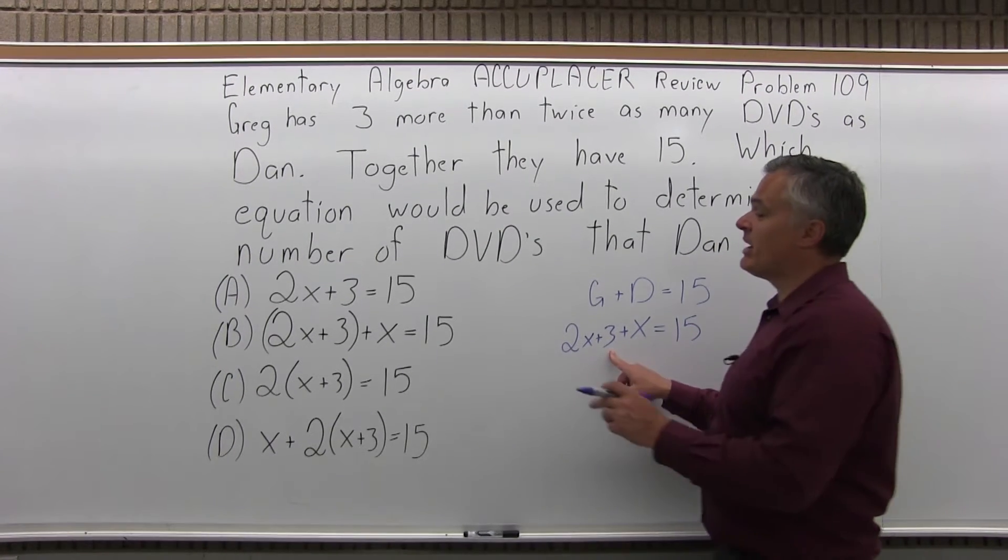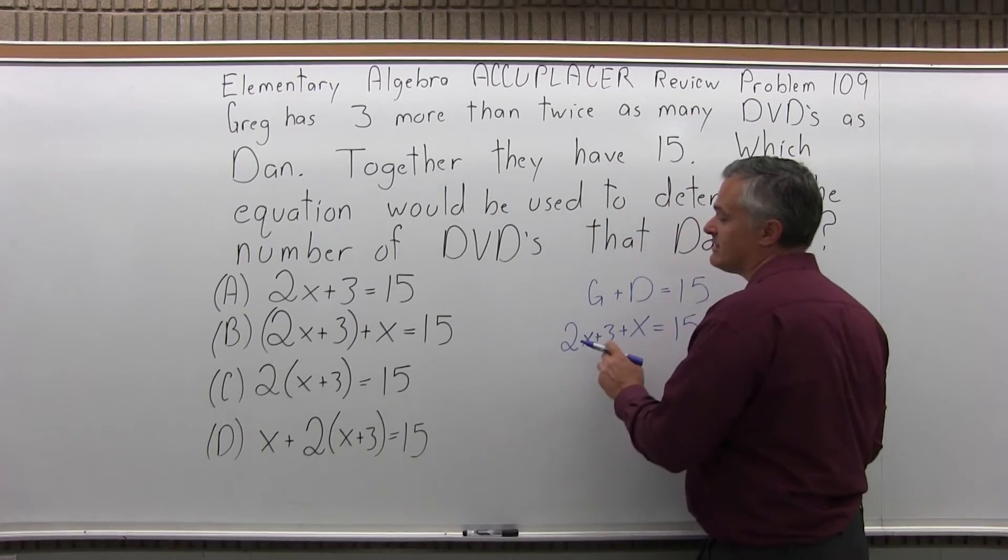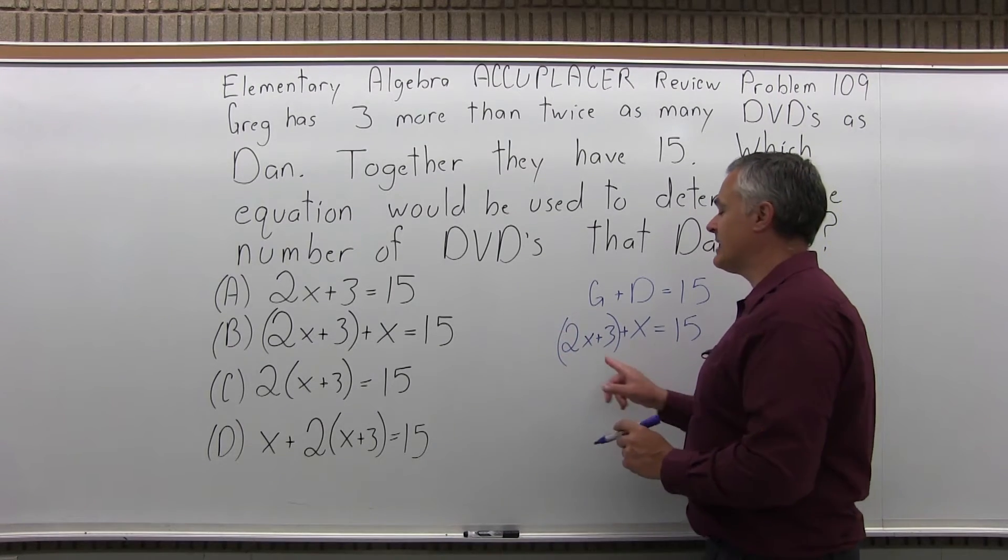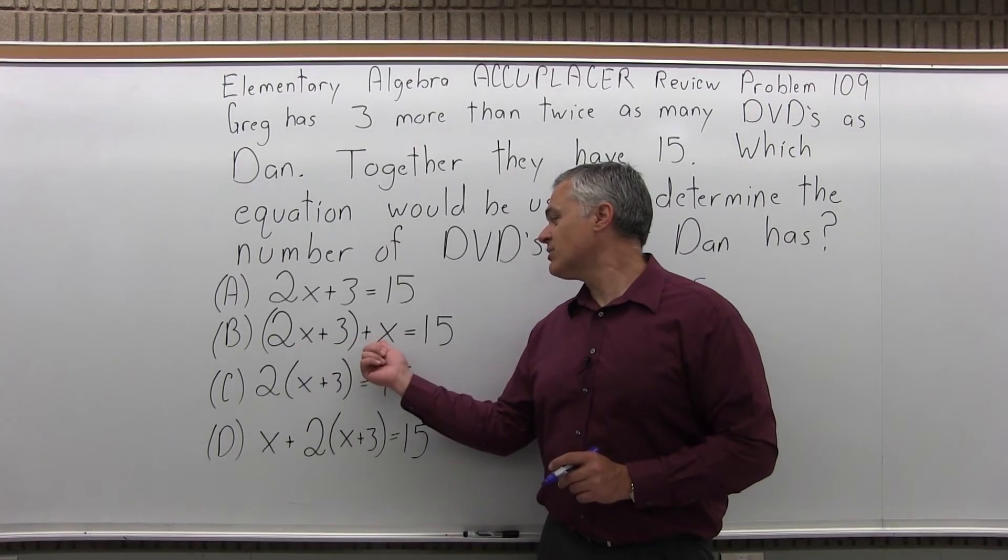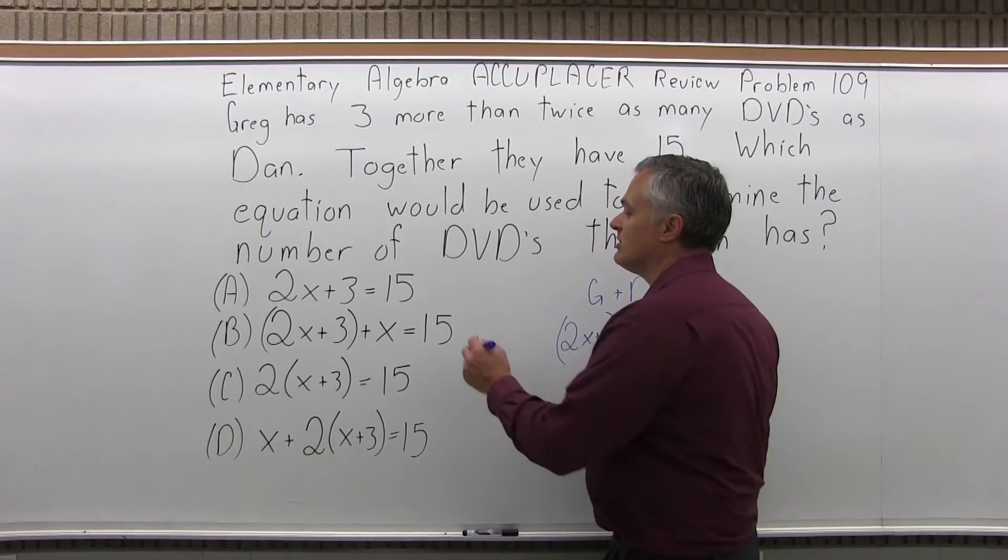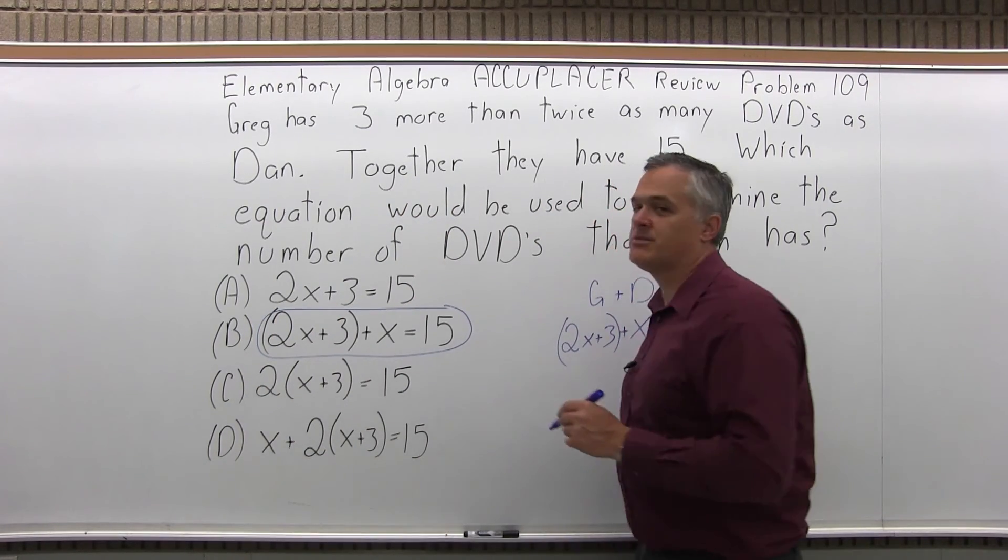Now, if I look at my options, option B is really close. Two X plus three is in parentheses. Well, I can add the parentheses. That would be the number of DVDs that Greg has plus the X for Dan would equal a total of 15. So, the answer for this problem, number 109, is option B.